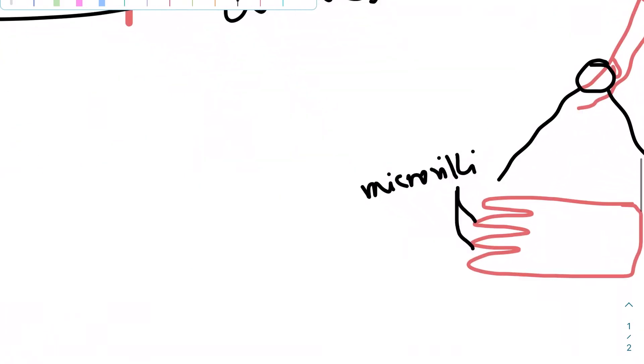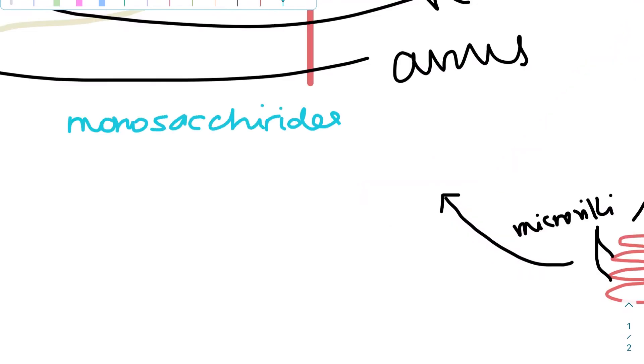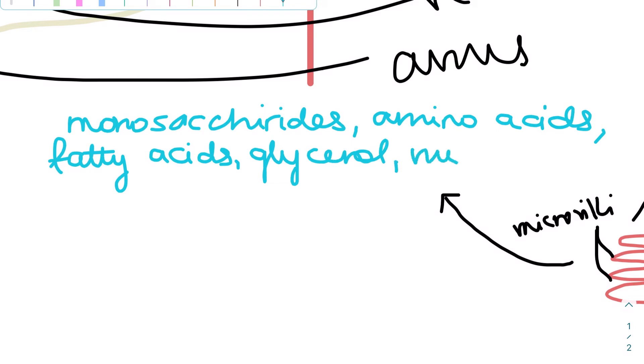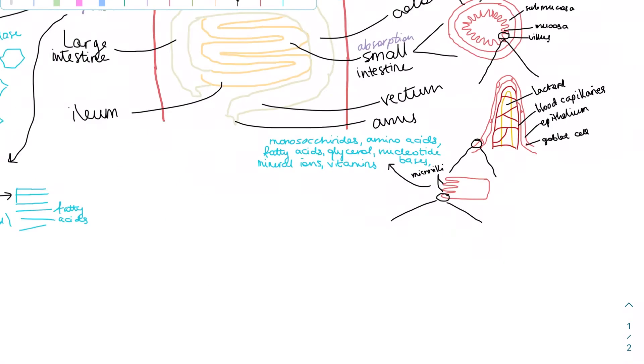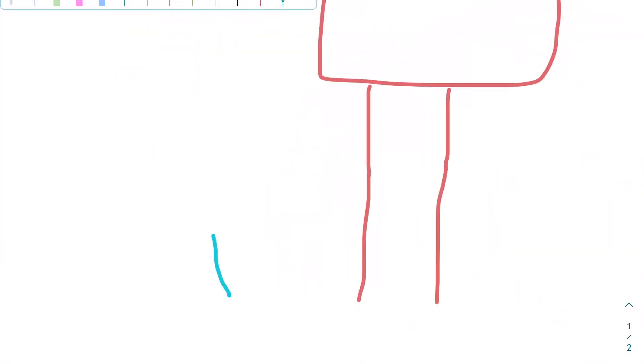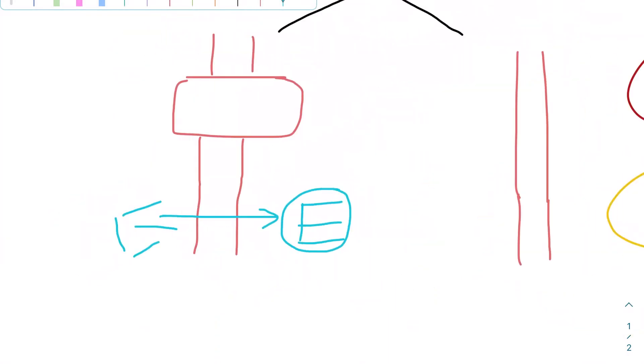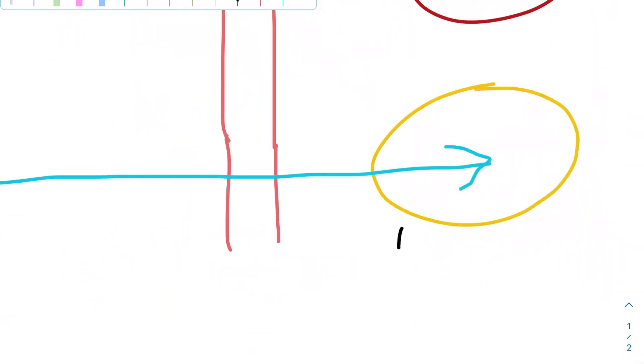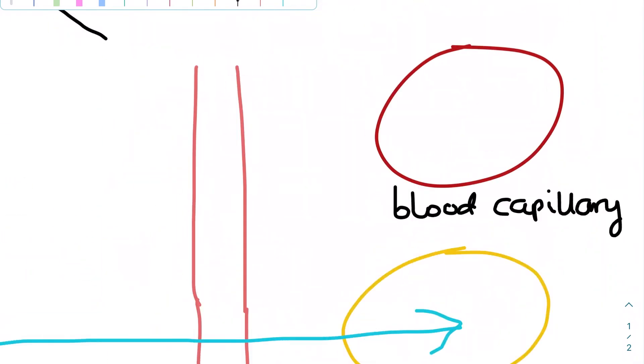Let's return to the purpose of these villi, which is to absorb. The nutrients that they absorb include monosaccharides, amino acids, the constituents of lipids which are glycerol and fatty acids, and bases of nucleotides. Additionally, components that require no breakdown, mineral ions like sodium and vitamins, are also absorbed. A lot of these pass through the epithelial cells through diffusion down their concentration gradients. For example, glycerol and fatty acids pass through the cell membrane easily because they are hydrophobic. In the epithelial cell, they are reassembled into triglyceride and transported in a lipoprotein into the lacteal.